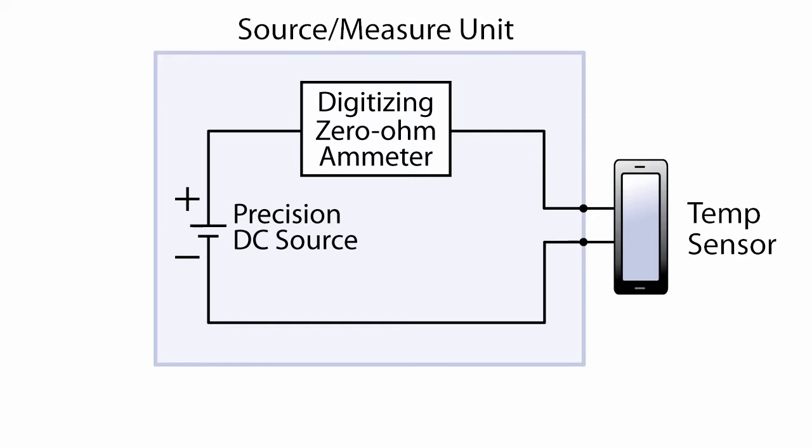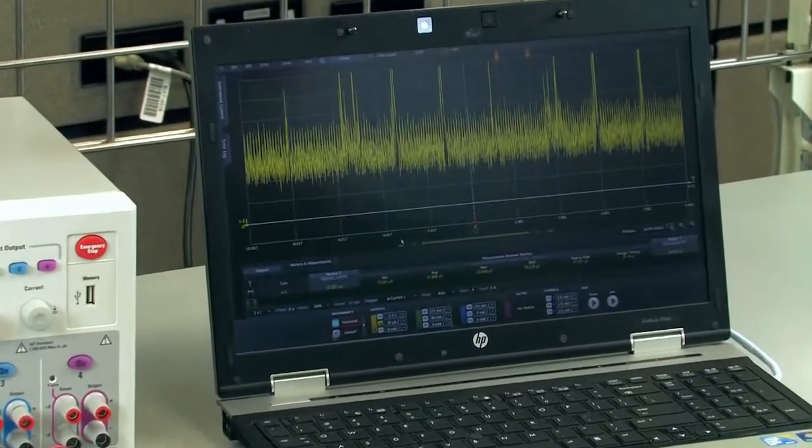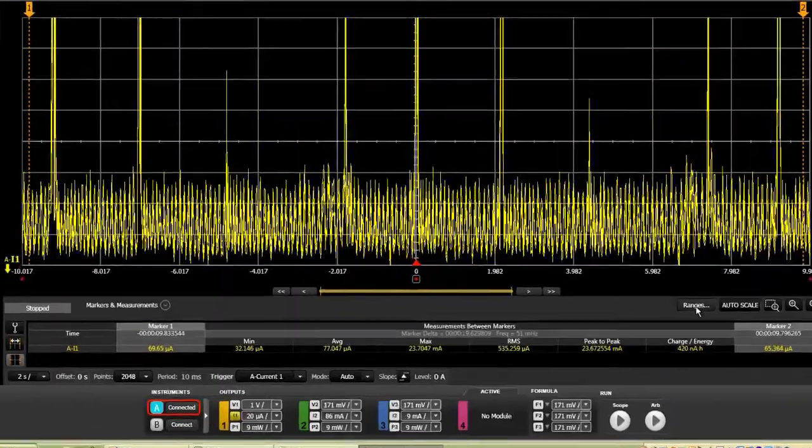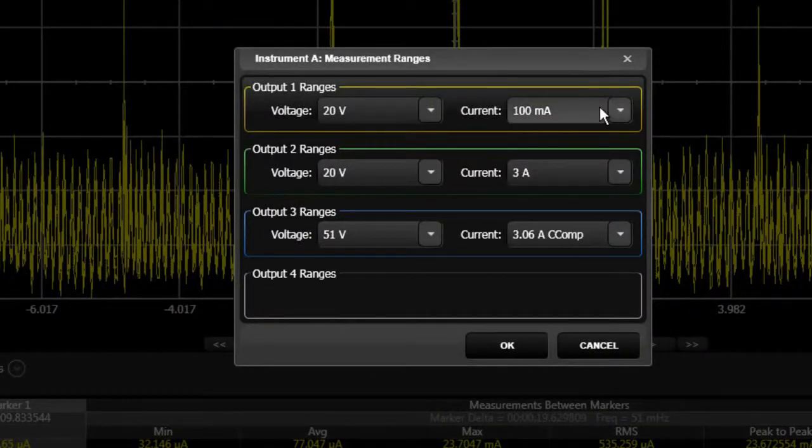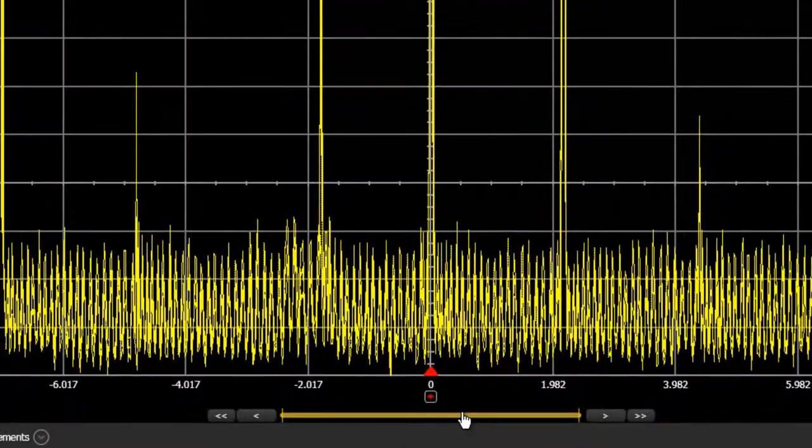Initially, the current was measured with the N6781A set to its fixed 100 mA measurement range. As shown here, this is comparable to the way conventional test equipment would be forced to make this measurement, because of the 21 mA transmit state current pulses.